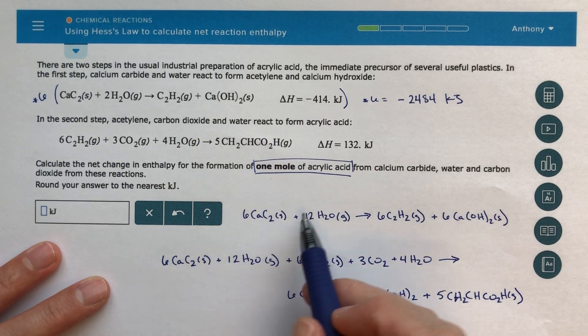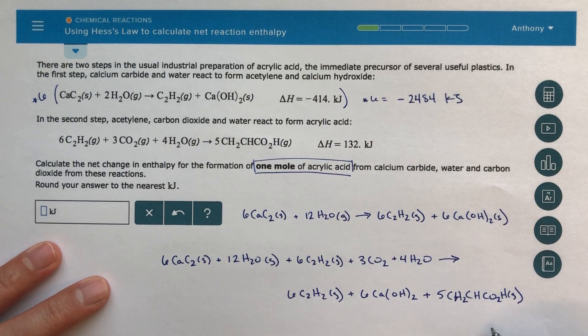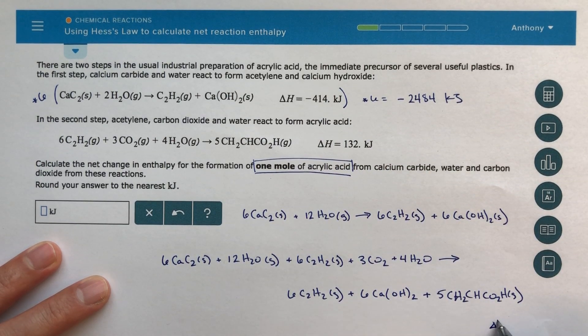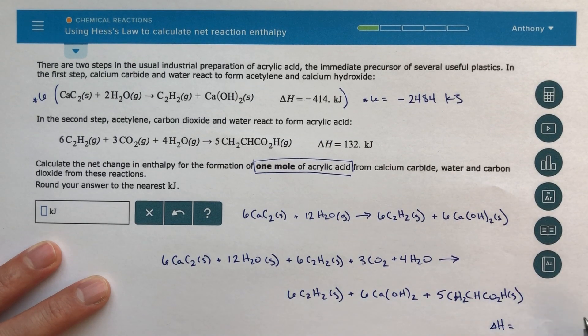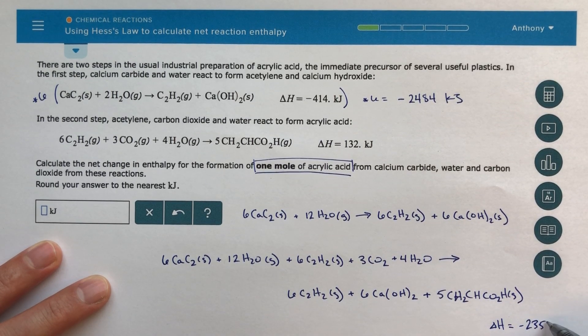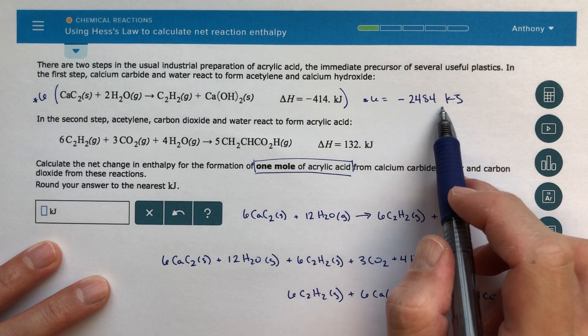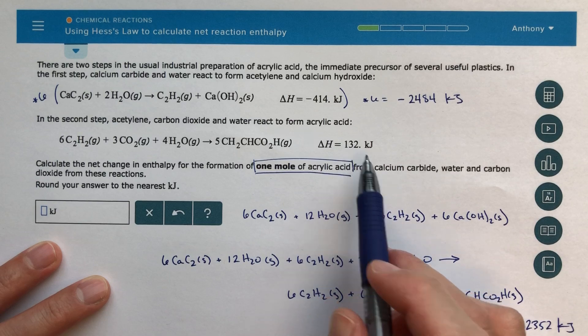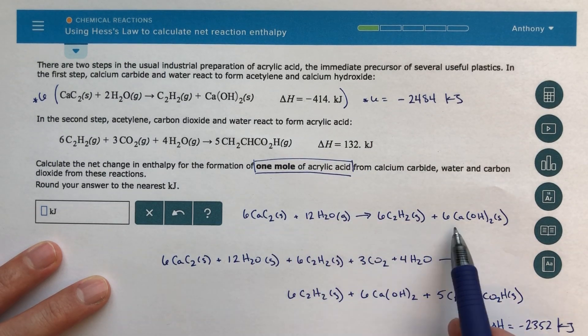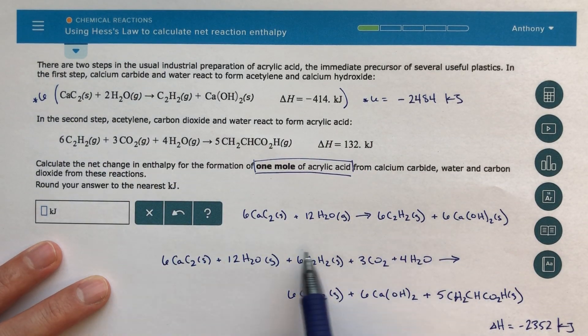And if I have added these two reactions together, then I'm going to add the delta H for these reactions. So the delta H for my new net reaction here is minus 2352 kilojoules. So I just added this minus 2484 plus 132 because when I add this new reaction to this bottom reaction, this is my new net reaction. So I've got to add that delta H.